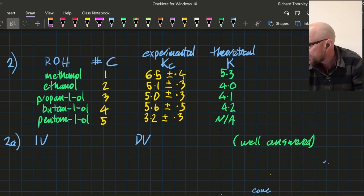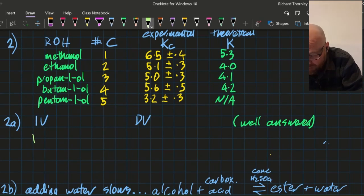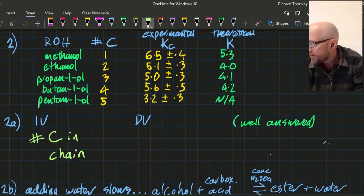Identify the independent and dependent variable. The independent variable is the one that you change—you changed the number of carbons in the chain. The dependent variable is what you measured after you messed about with the independent variable, and that looks like it's KC. The dependent variable was KC. Chain length or number of carbons, and dependent variable is equilibrium constant. That was well answered.